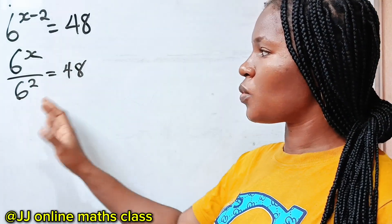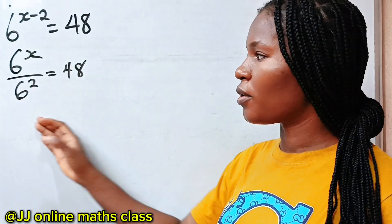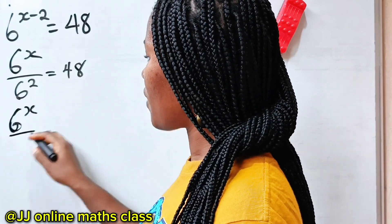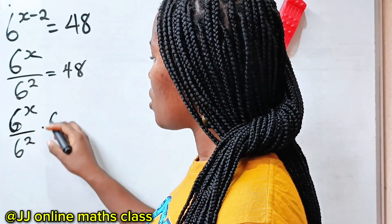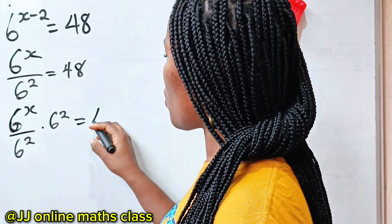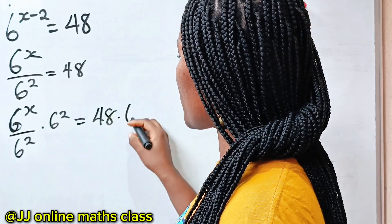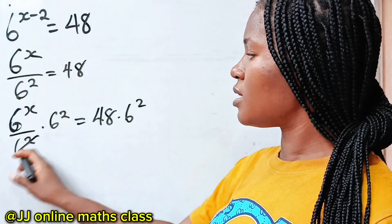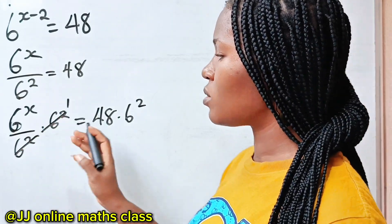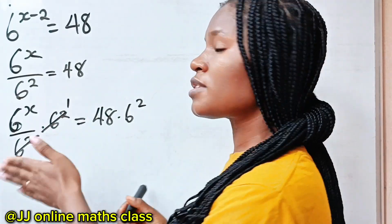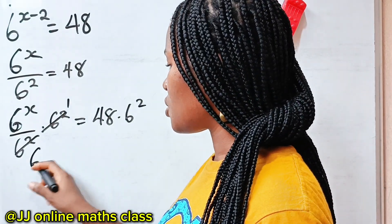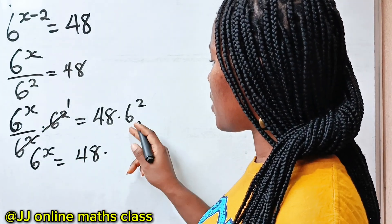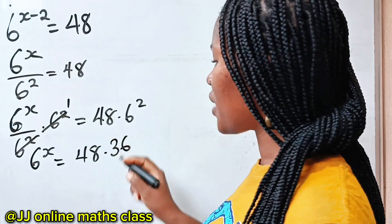Now let's multiply both sides of this equation by 6 to the power of 2. We have 6 to the power of x divided by 6 to the power of 2, multiplied by 6 to the power of 2, is equal to 48 multiplied by 6 to the power of 2. Notice that this is going to divide itself to give us 1, so the left-hand side becomes 6 to the power of x is equal to 48 multiplied by 36.